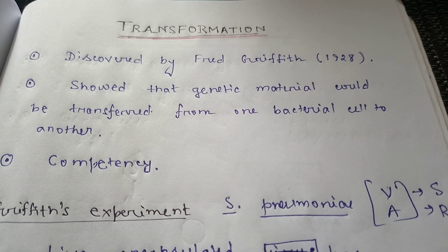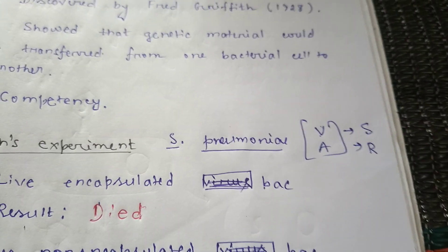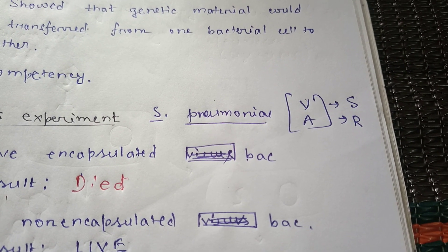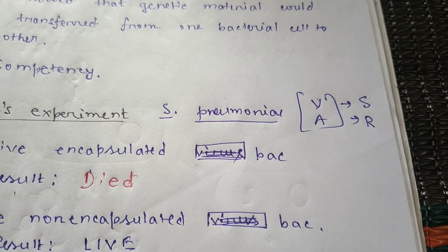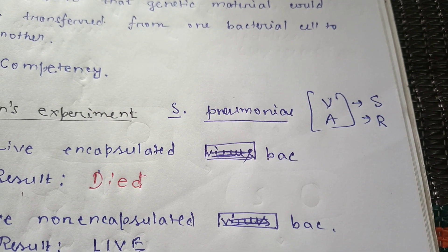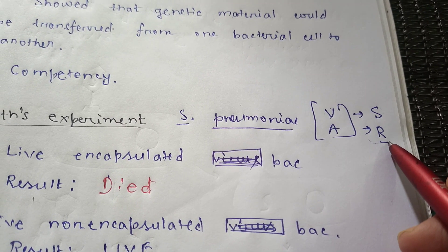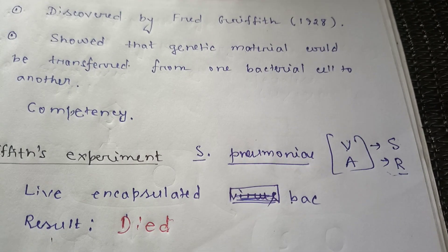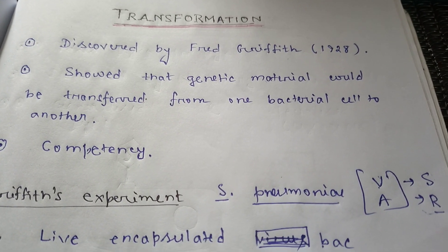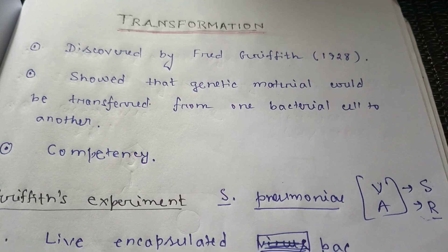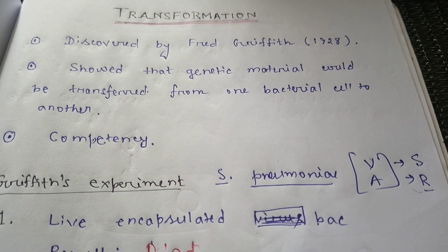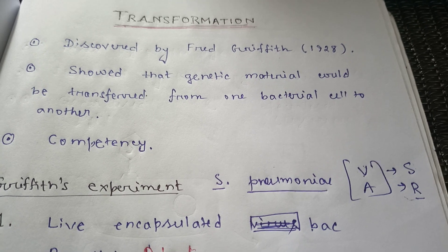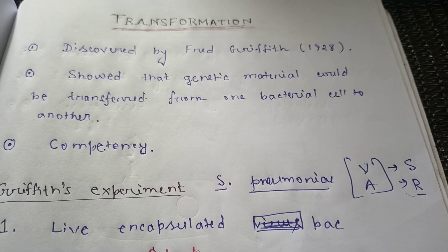Regarding smooth and rough: encapsulated bacteria form smooth colonies, which is why the virulent strain is called S. Non-encapsulated strains produce rough colonies, hence R. One major fact to remember is that Griffith's results provided one of the conclusive indications that DNA is indeed the carrier of genetic information. There are other supporting experiments too, like the Avery-MacLeod-McCarty experiment, but Griffith's experiment also proves that DNA is the genetic material.